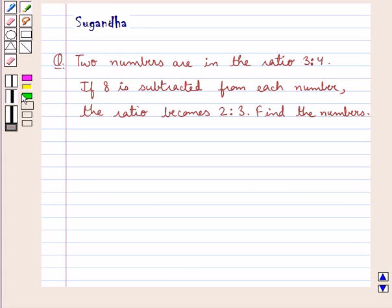Hello and welcome to the session. In this session we discuss the following question which says two numbers are in the ratio 3 is to 4. If 8 is subtracted from each number, the ratio becomes 2 is to 3. Find the numbers.